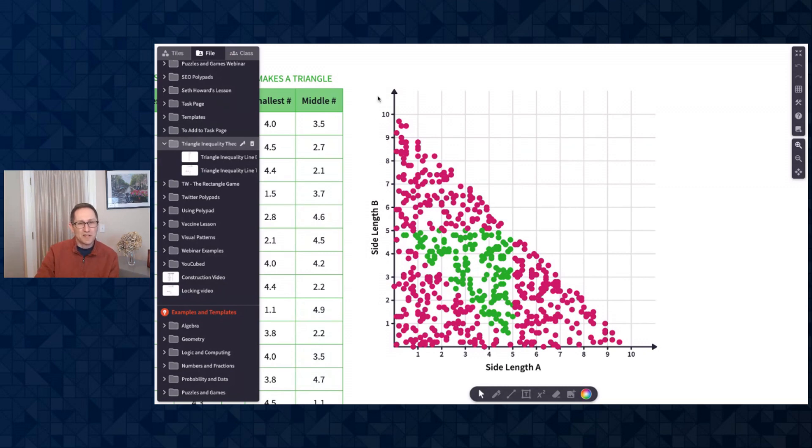I might then have a class conversation about what's happening maybe in this upper triangle. Here, the points of side length A are really, really small. These points in the upper triangle here are really small side lengths A, and really big side length B, which means we have that one really long one. We're not going to be able to make a triangle there. I think this is a really nice example of the area model of thinking about probabilities.